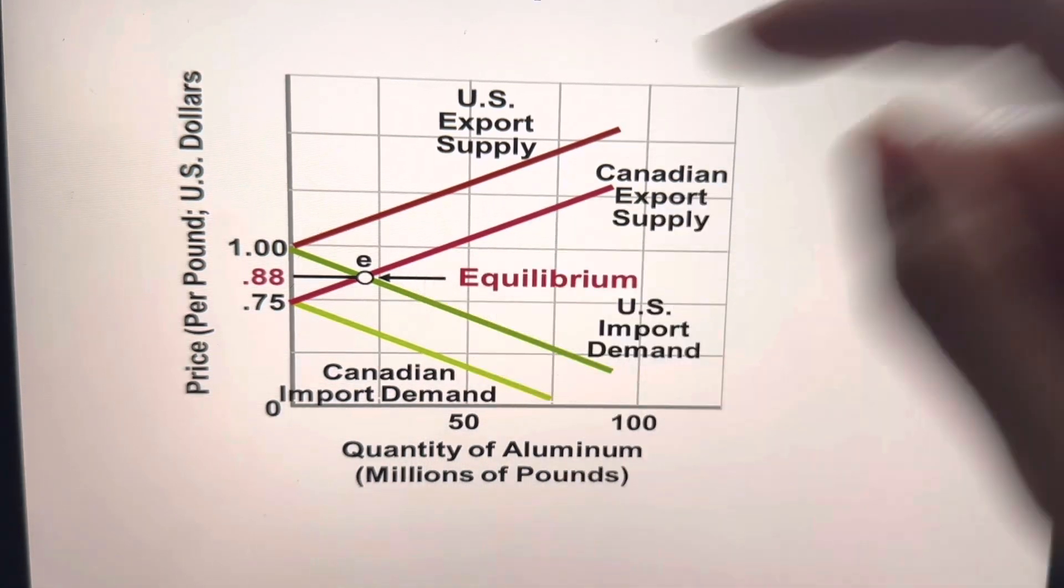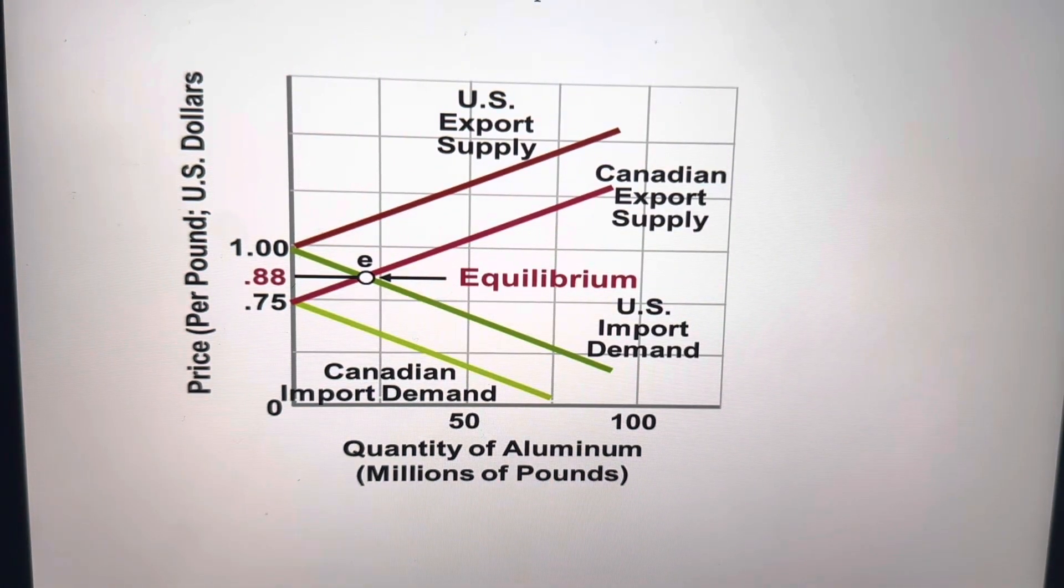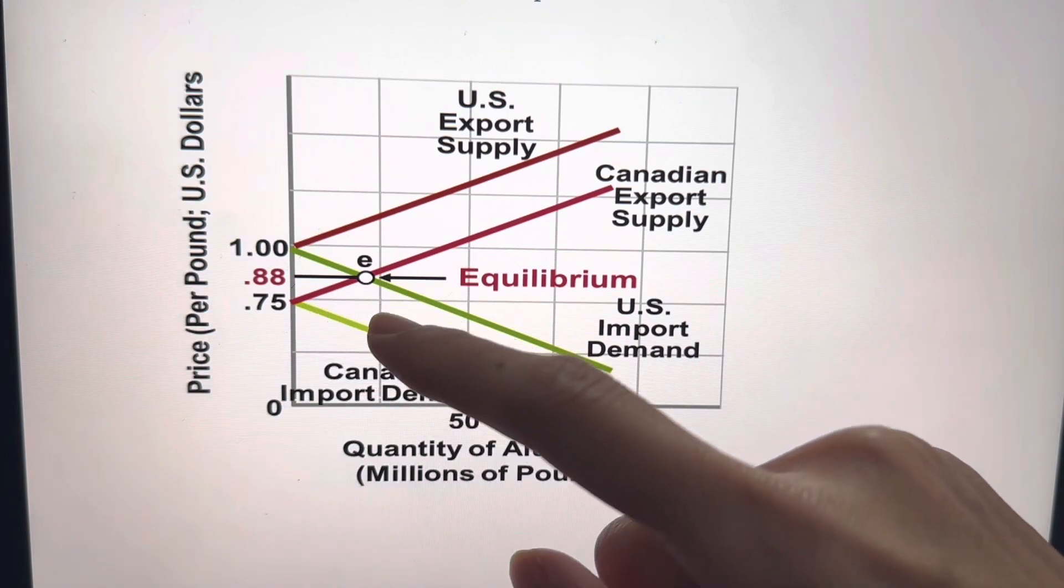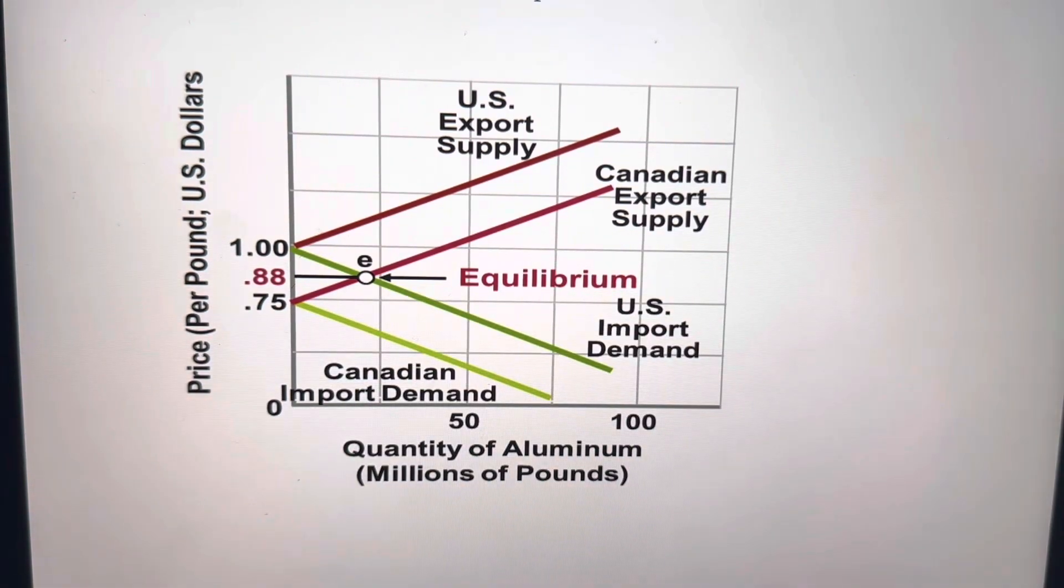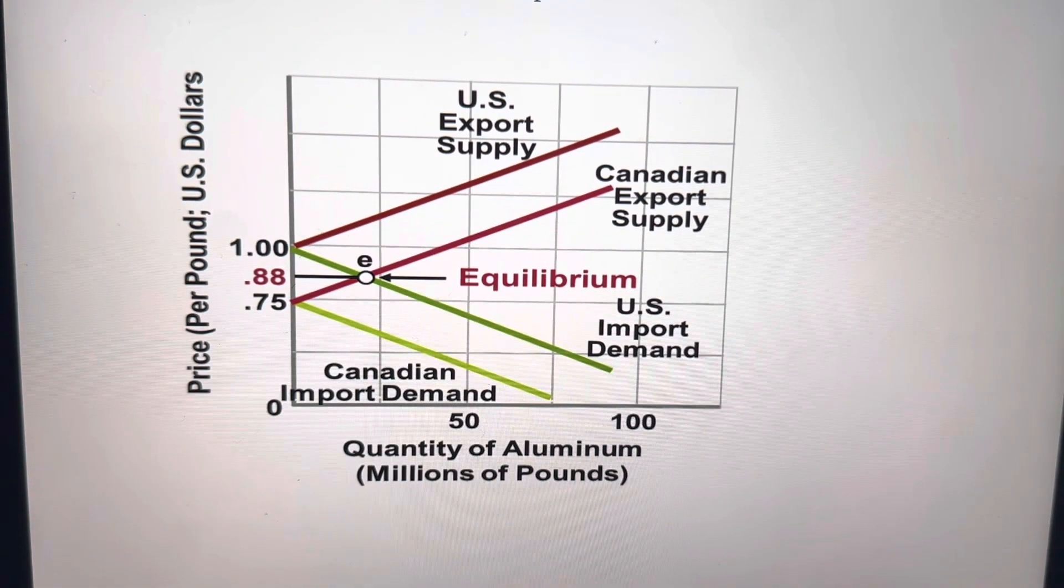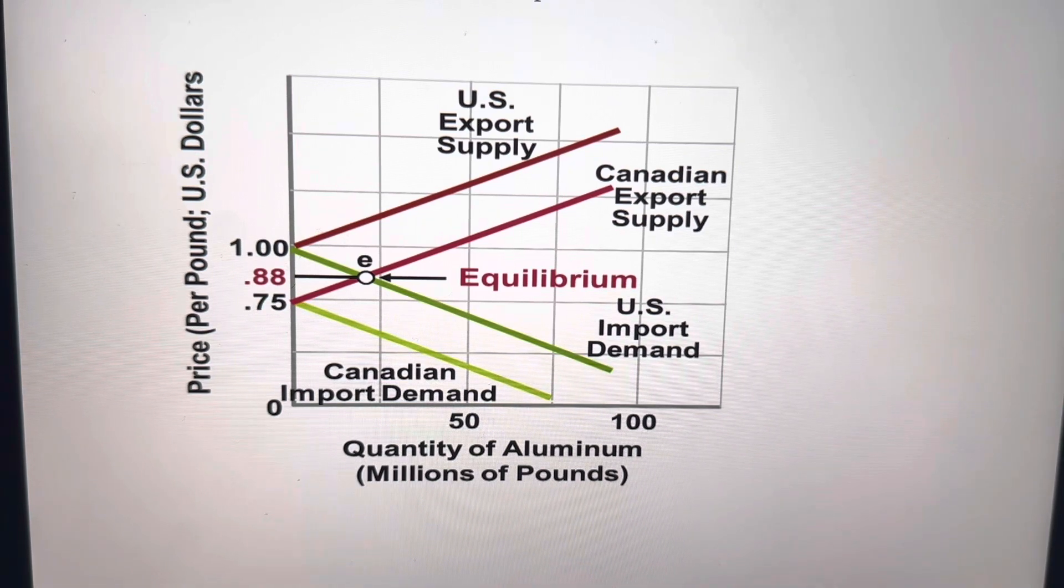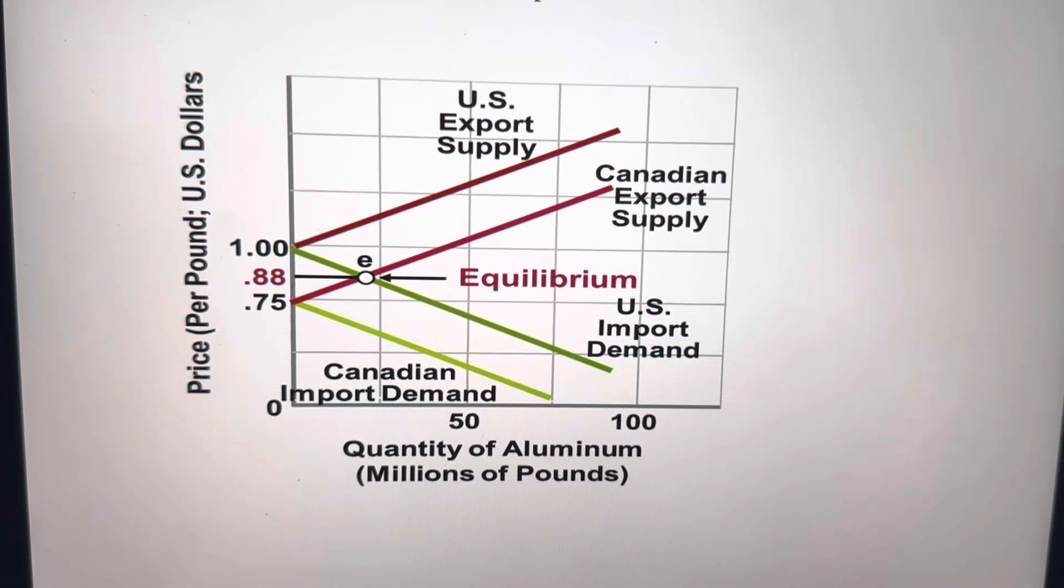So at this point E, we can see that this is the price at which U.S. will import aluminum and this is the price at which Canada will export its aluminum.